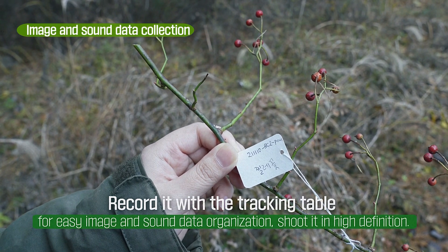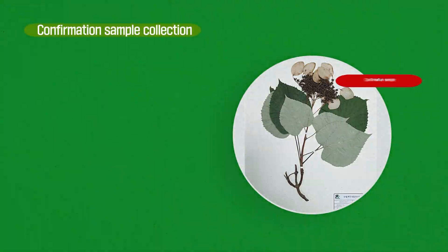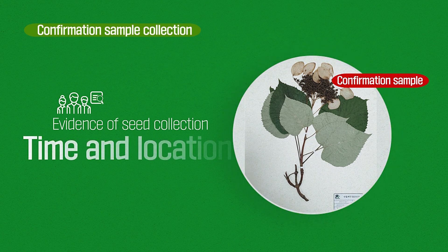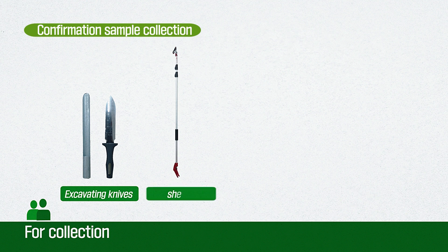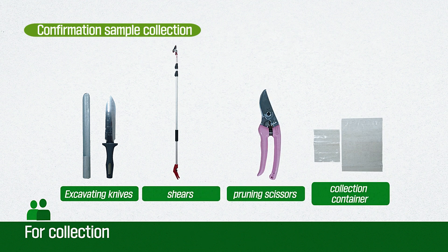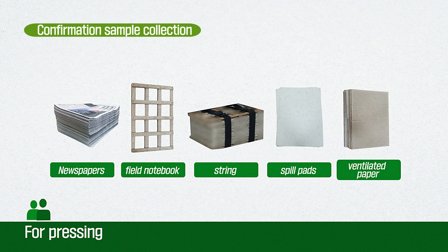Confirmation sample collection. The confirmation sample must be collected and pressed while collecting seeds because it is evidence of the relevant seeds and is a permanent record of the time and location of individuals or groups. Collecting activities require an excavating knife, shears, pruning scissors, and a collection container. Pressing the sample requires newspaper, field notebook, string, spill pads, and ventilated paper.